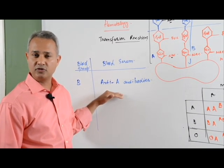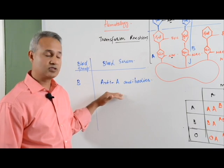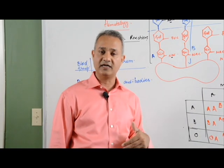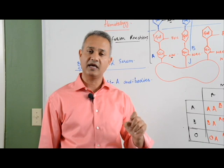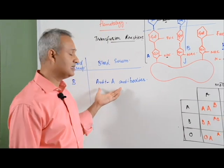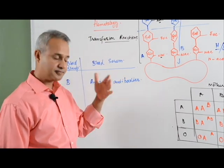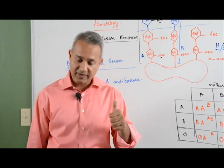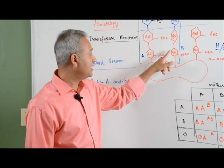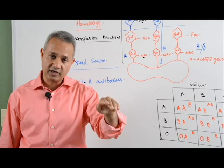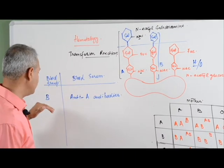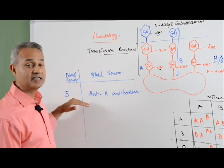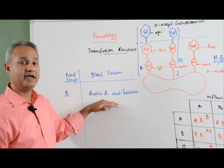My blood starts developing anti-A antibodies within 2 to 3 months. Similarly, the bacteria that colonize our gut also produce these antigens. My gut bacteria make both B antigens and A antigens, and these antigens enter my blood. The immune system looks at B and says that is fine, it is part of the body. But when it looks at A, it says this is not part of the body, and it creates anti-A antibodies.